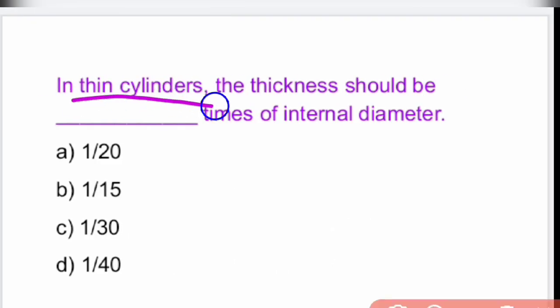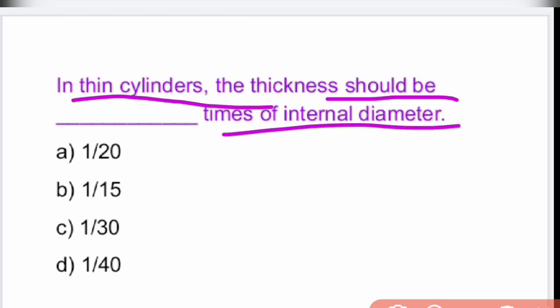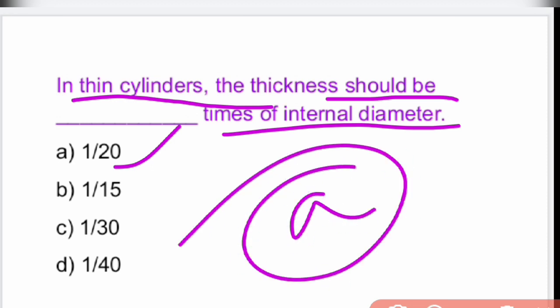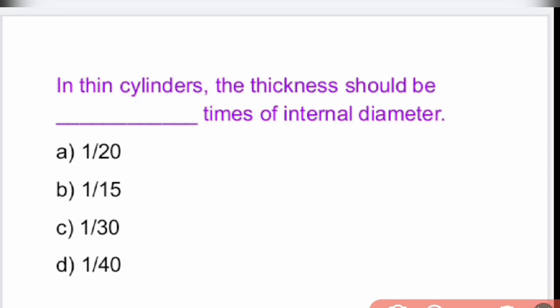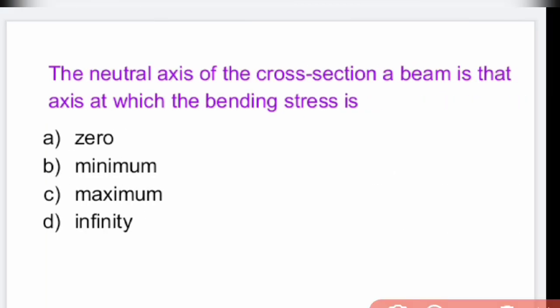In thin cylinders, the thickness should be 1/20th times the internal diameter. That is option A, 1 by 20.